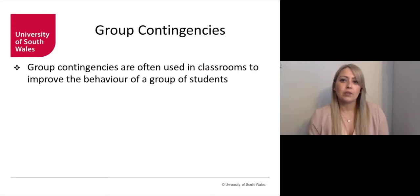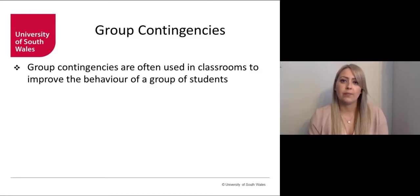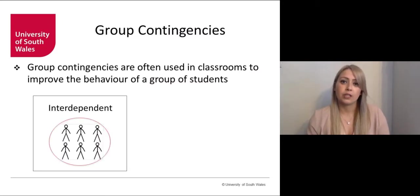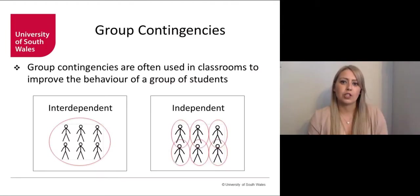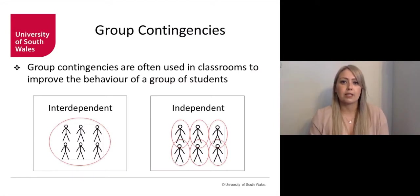They're particularly useful if you have many students within a classroom who engage in problematic behaviour, as you can target the whole class with one intervention. One type of group contingency is an interdependent group contingency, in which the same contingency of reinforcement is in effect for all members, and reinforcement delivery is determined by the overall performance of the group. Another type is an independent group contingency, whereby the contingency is presented to all members, but reinforcement is only delivered to those who meet a particular criterion.